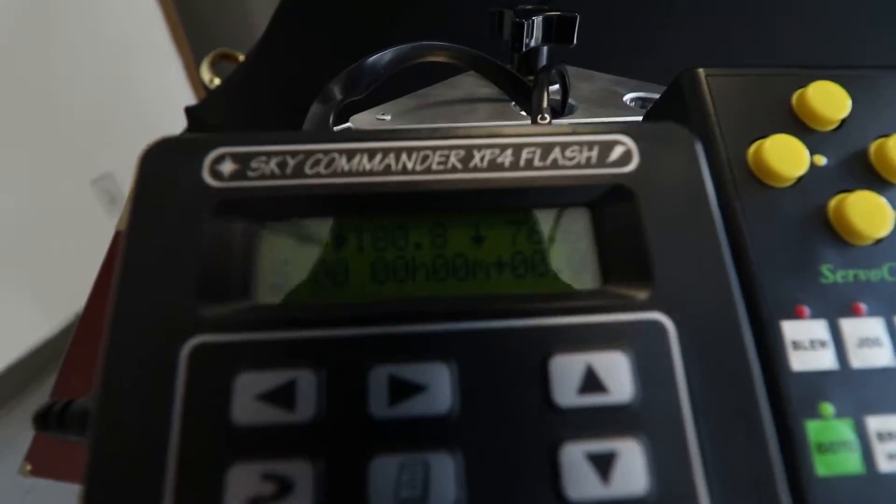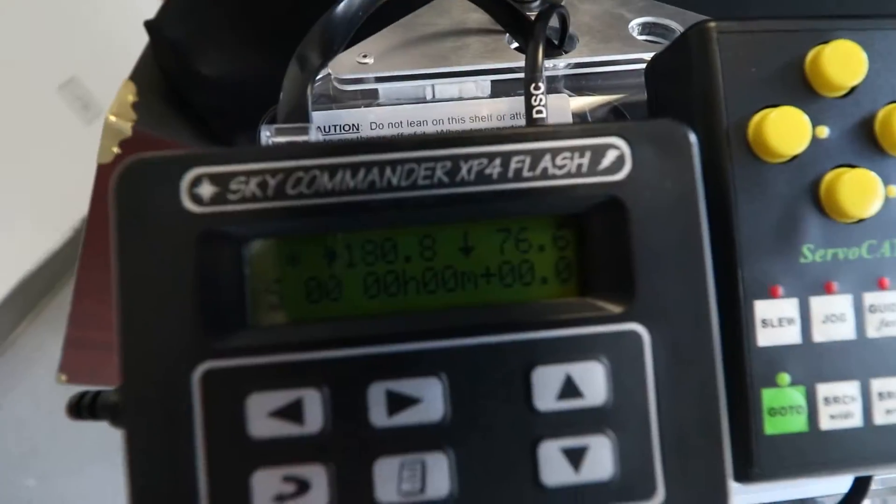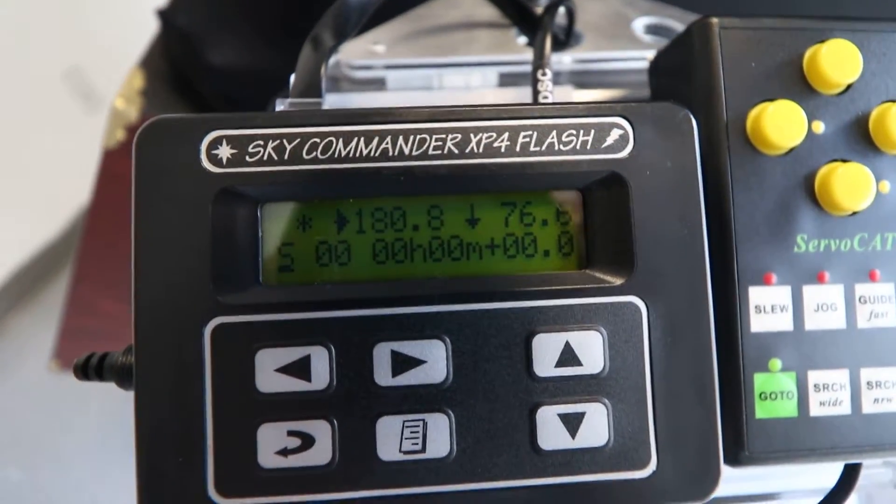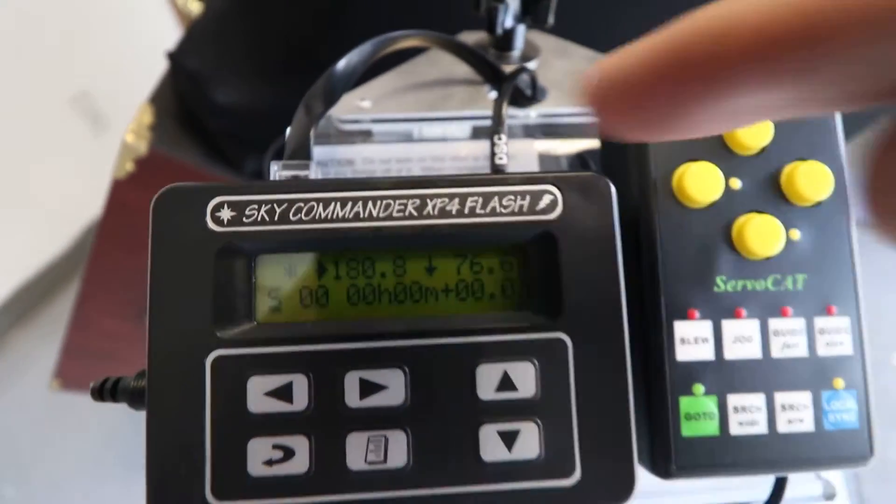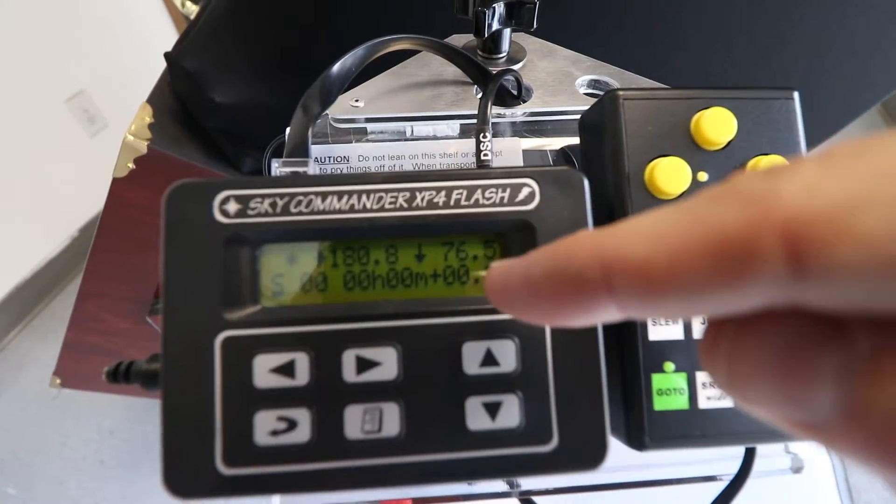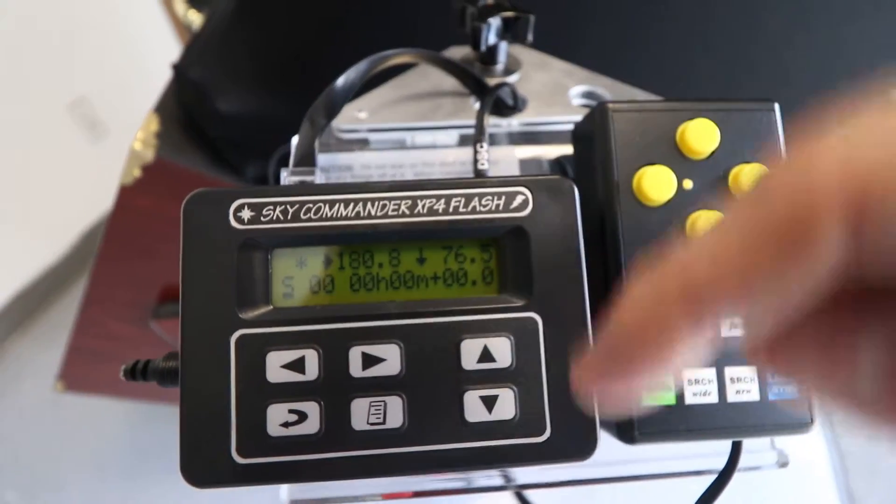Here on the screen of the Sky Commander, I moved it to a different catalog so that the altitude here up and down is 76.5 degrees down from where the telescope is currently pointed.